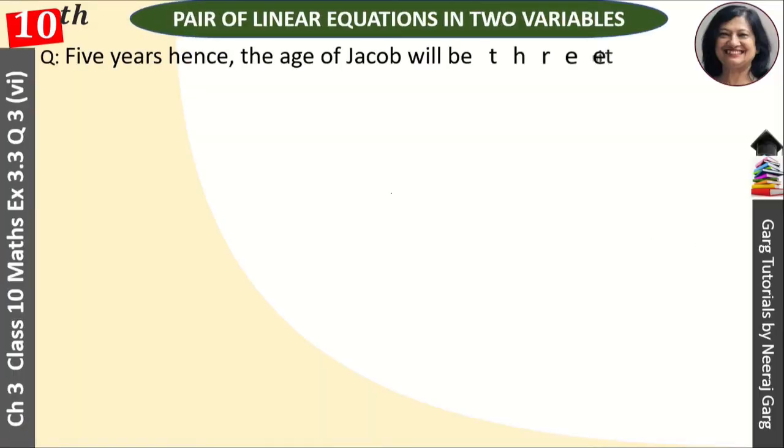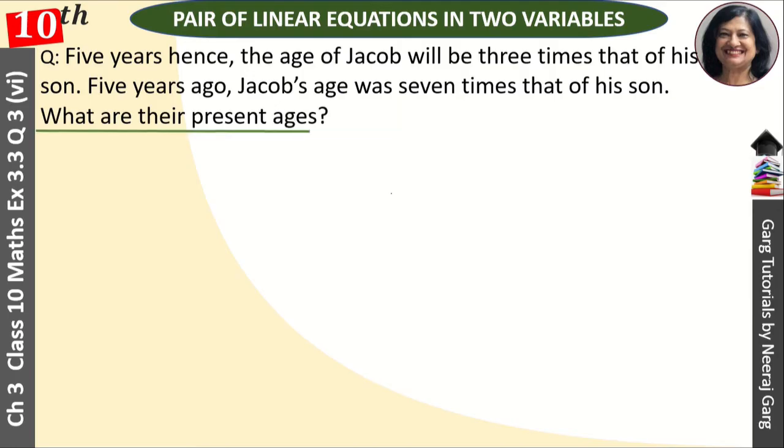Hi this is Nijaskar and you are watching class 10th chapter 3, pair of linear equations in two variables, exercise 3.3 question number 3. Five years hence, the age of Jacob will be three times that of his son. Five years ago, Jacob's age was seven times that of his son. What are their present ages?